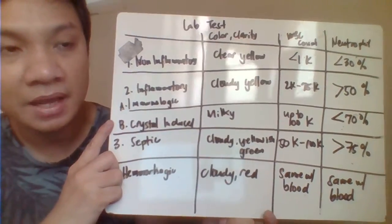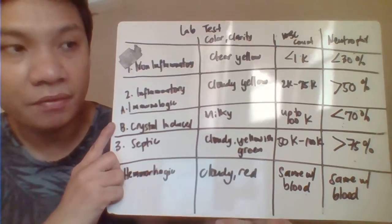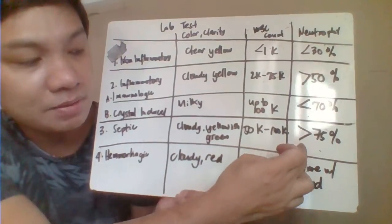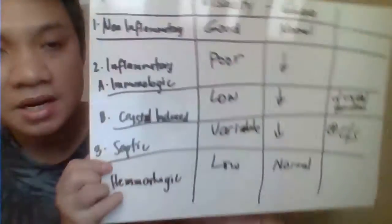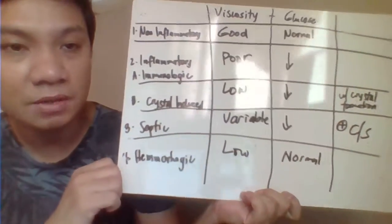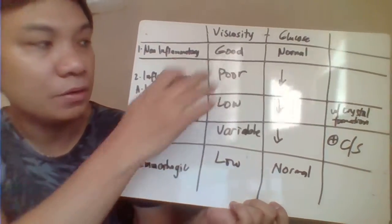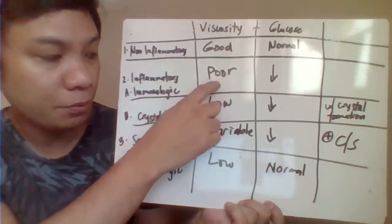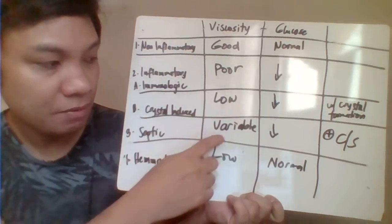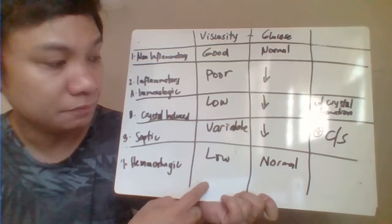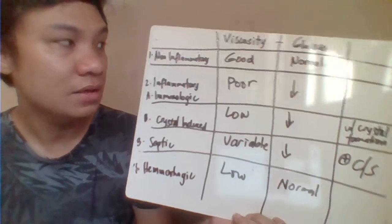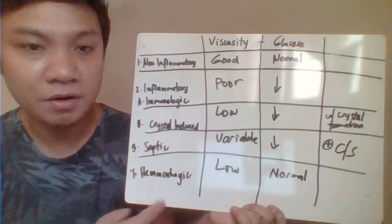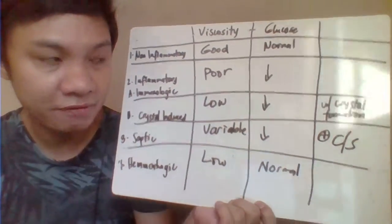For neutrophil count: non-inflammatory is less than 30%; inflammatory is less than 50%; crystal-induced less than 70%; septic is more than 75%; and hemorrhagic is the same as blood. For viscosity: non-inflammatory is good; inflammatory is poor; crystal-induced is low; septic is variable; and hemorrhagic is low. For glucose level: non-inflammatory is normal; hemorrhagic is also normal; all the rest would have a low glucose value.